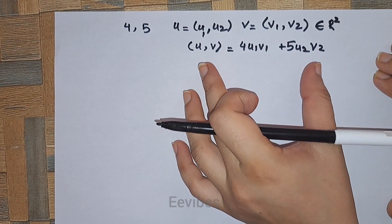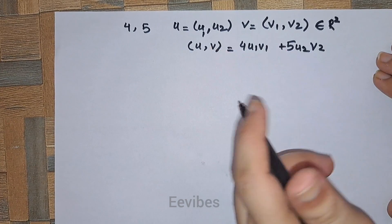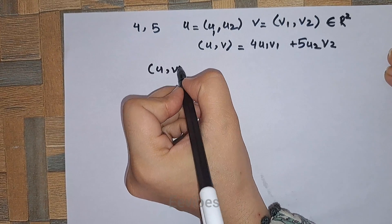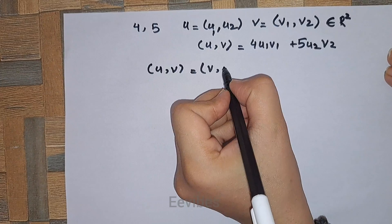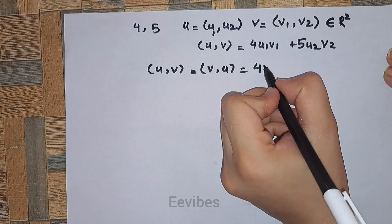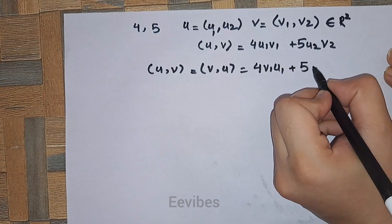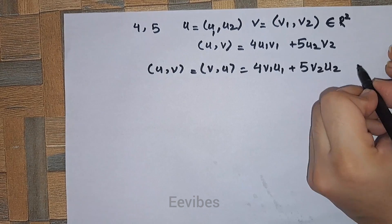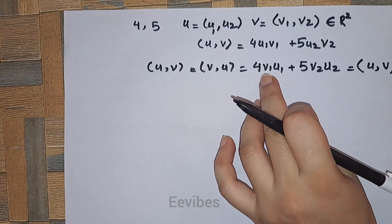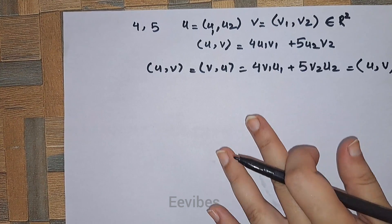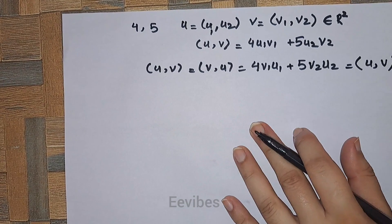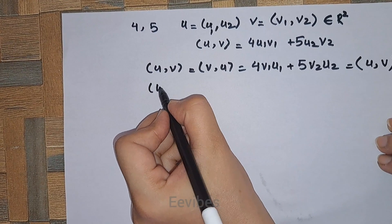We need to test that this function defines an inner product on these vectors. For the first property (commutativity), switching u and v gives 4·v1·u1 + 5·v2·u2, which clearly equals ⟨u, v⟩ since multiplication of constants is commutative — just as 2×3 = 3×2. So the first property is satisfied.